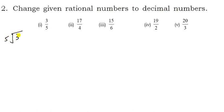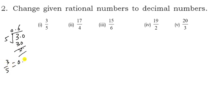Second question: change the given rational number to decimal form. For 3 upon 5: divide 3 by 5. Five 6s are 30, so 3 upon 5 = 0.6. That is your answer.